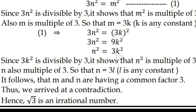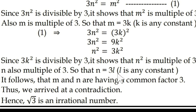Now 3k² is also divisible by 3, which shows that n² is a multiple of 3. Similar to before, since n² is a multiple of 3, n is also a multiple of 3. So n can be written as 3 times some constant — n = 3l.